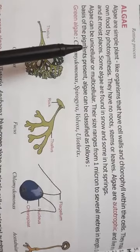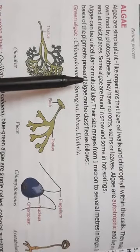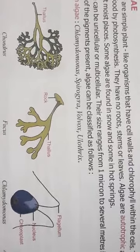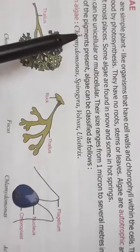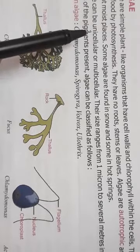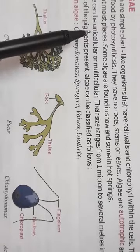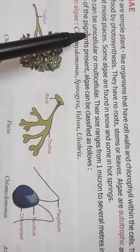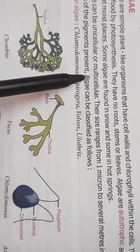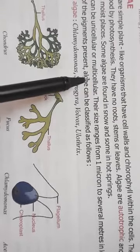Algae can be unicellular or multicellular. What do you mean by unicellular? Unicellular means organisms which are uni means single cell - the organisms which are made up of one single cell. And multicellular means the organisms which are made up of many cells.